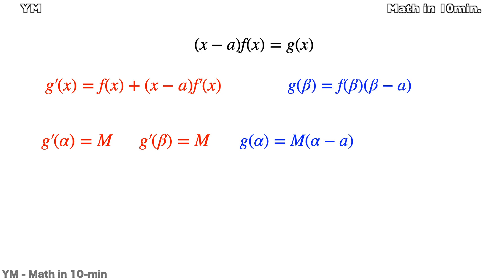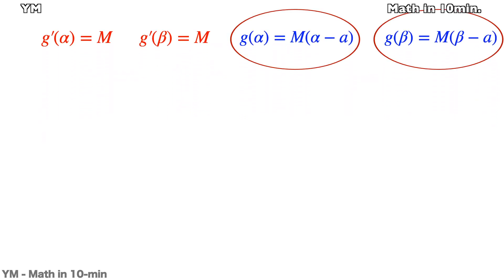Similarly, g(β) is M(β - a). Now, let me subtract these two. g(β) - g(α) is equal to this one, and it's simply calculated to M(β - α).